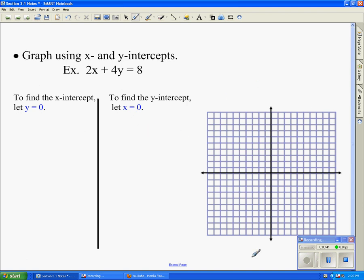So I start with my original equation, 2x + 4y = 8, and I'm going to substitute 0 in place of y. So that's 2x + 4(0) = 8. 4 times 0 is 0, so that goes away. Divide both sides by 2, x equals 4. My x-intercept is 4, but it's written as the ordered pair (4, 0).